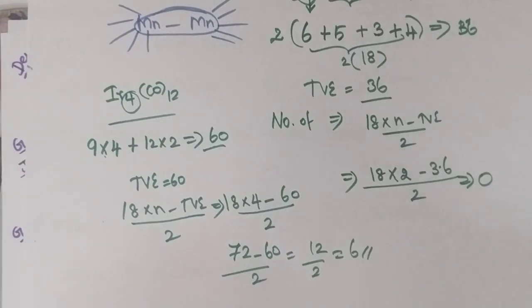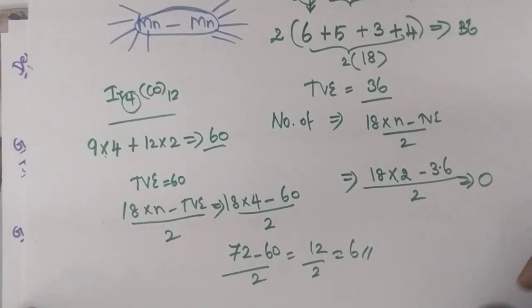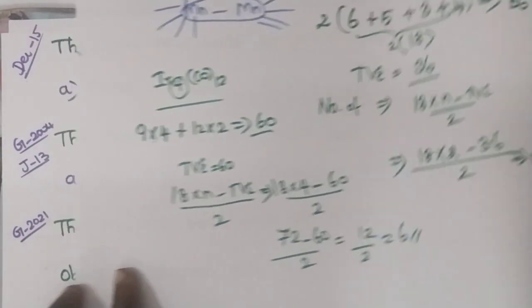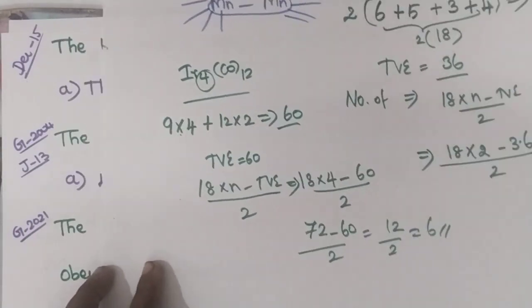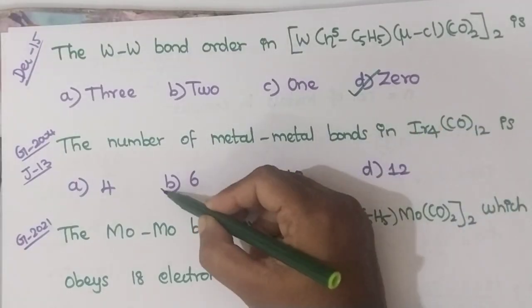It is very simple. First step: find out the total valence electron. After that, substitute in the formula — 18 × (number of metal atoms) minus total valence electron, divided by 2. You will get the number of metal-metal bonds. In this case, it is 6.